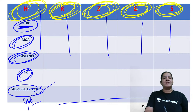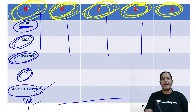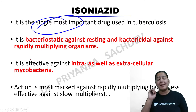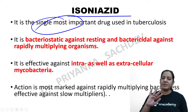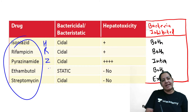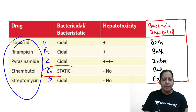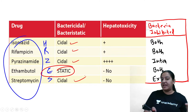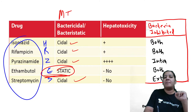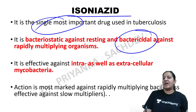Starting isoniazid. In the introduction, write: isoniazid is the single most important drug among the five HRZES drugs. Regarding bactericidal vs bacteriostatic: all five drugs are bactericidal except ethambutol, which is bacteriostatic. So isoniazid is bactericidal — it kills Mycobacterium tuberculosis.